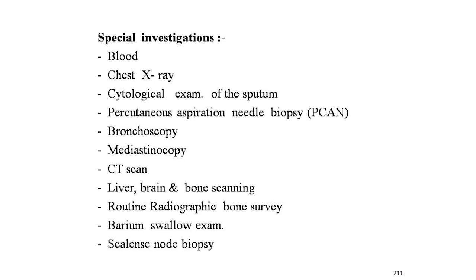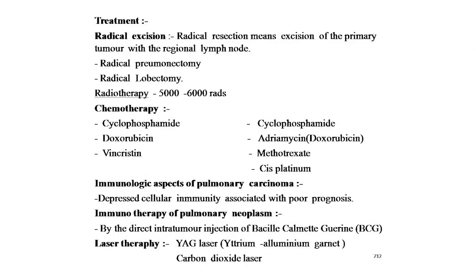Treatment of primary lung carcinoma: radical resection — excision of the primary tumor with regional lymph nodes; radical pneumonectomy; radical lobectomy. Radiotherapy: 5000 to 6000 rads. Chemotherapy agents: cyclophosphamide, doxorubicin, vincristine, adriamycin, methotrexate, cisplatinum. Immunological aspects: depressed cellular immunity is associated with poor prognosis. Immunotherapy by direct intratumor injection of BCG (Bacillus Calmette-Guérin). Laser therapy: Nd:YAG laser and carbon dioxide laser.